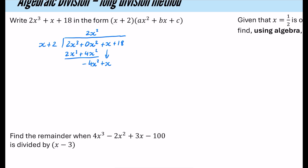Divide the dominant term: minus 4x² divided by x is minus 4x. Multiply minus 4x by (x+2) to get minus 4x² minus 8x. Subtract — be careful, because we're doing x minus (minus 8x), which becomes x plus 8x, which is 9x. Bring the 18 down. Then 9x divided by x is plus 9. Multiply 9 by (x+2) to get 9x+18. They cancel completely — remainder is 0.